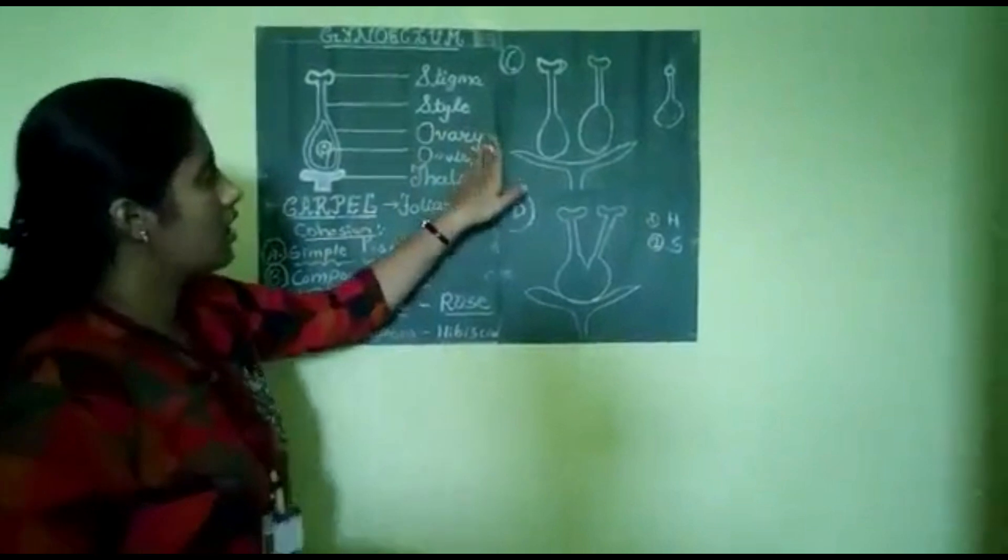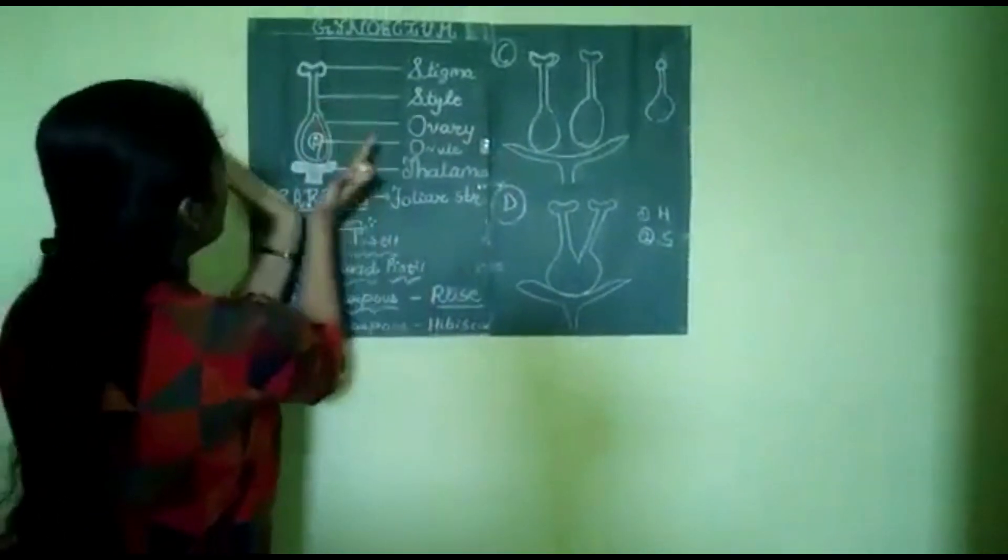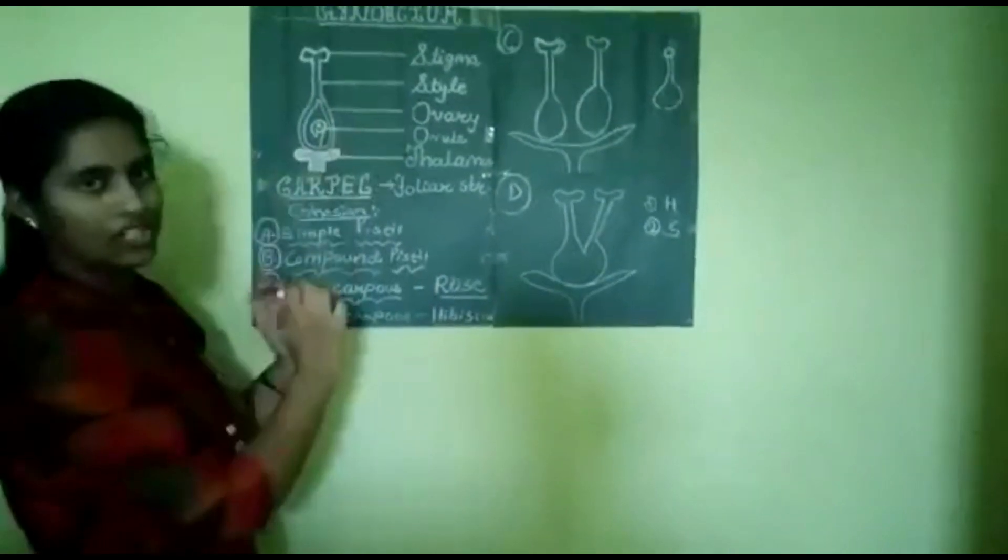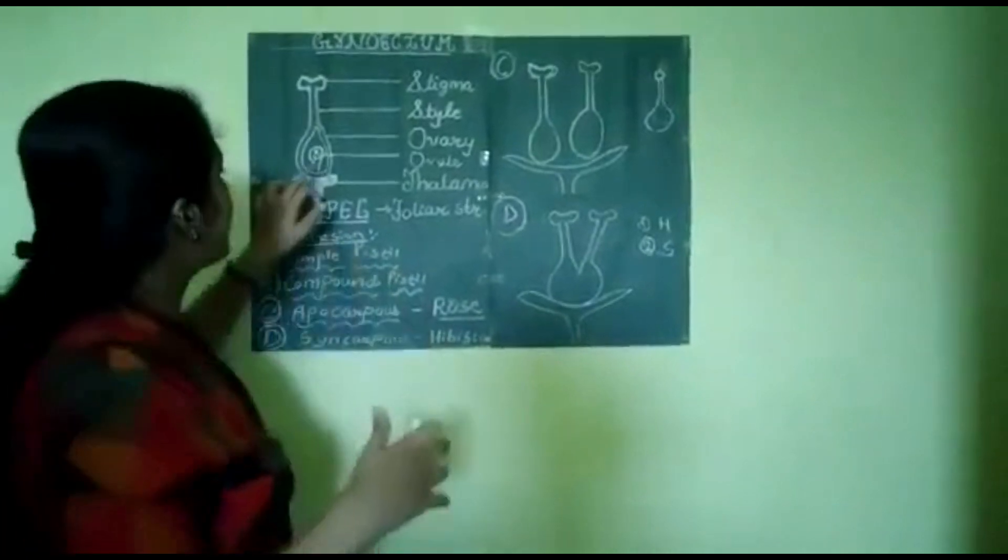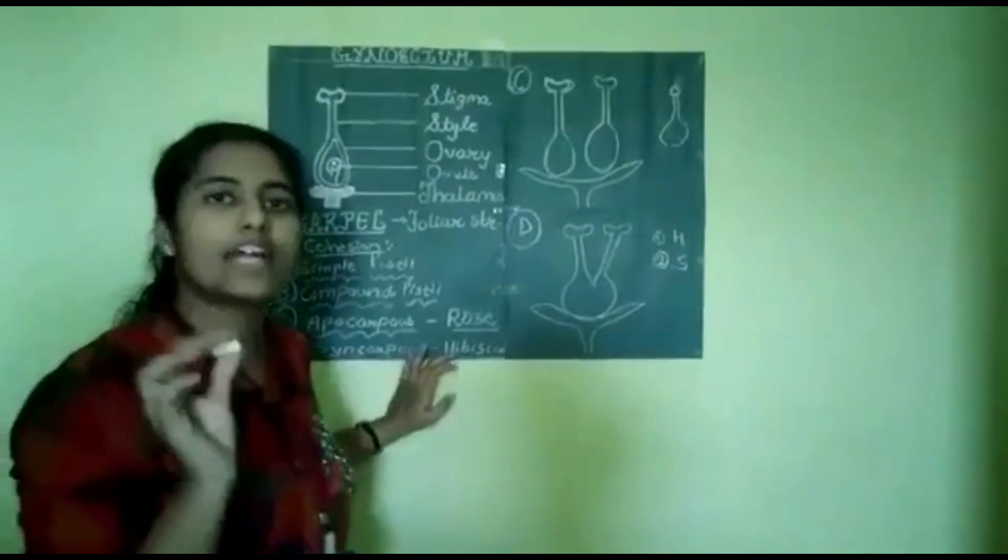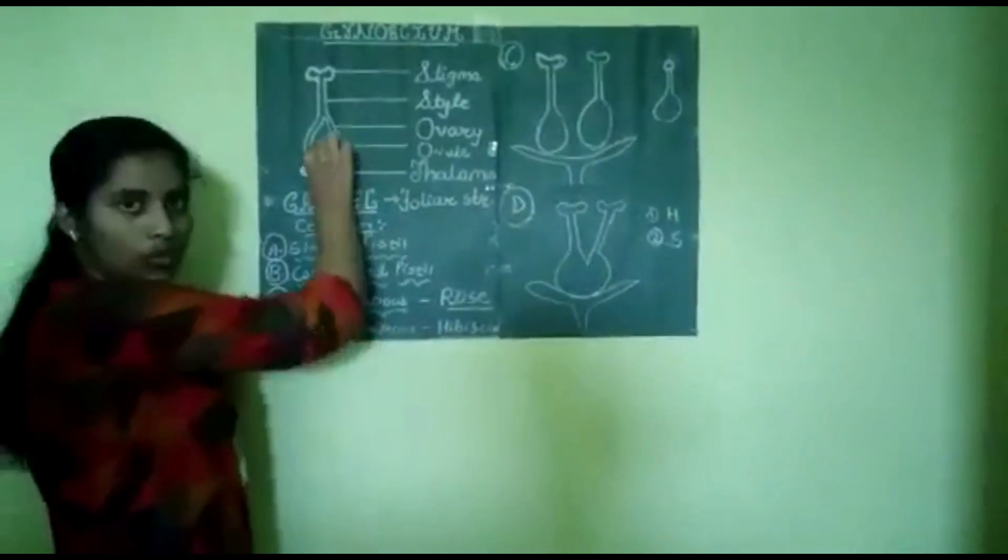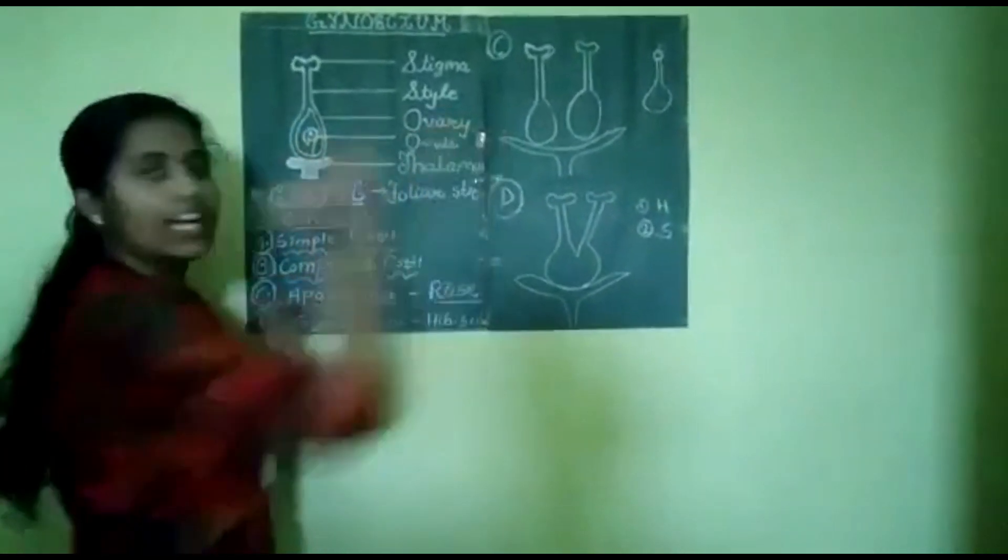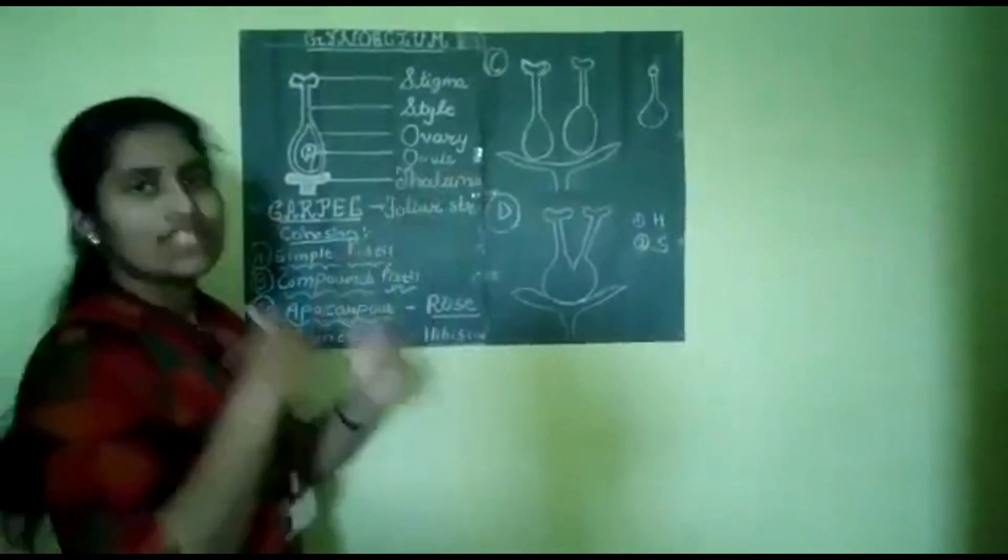Now let's start about the ovary. What is ovary? As we could see here, ovary is present at the basal region which is somewhat swollen and it is hollow in nature. It contains placenta. Placenta, it is the parenchymatous tissue which bears ovule. Inside it, it contains the ovule. Ovary forms fruit whereas ovule forms seed.